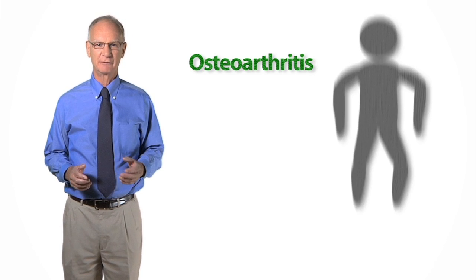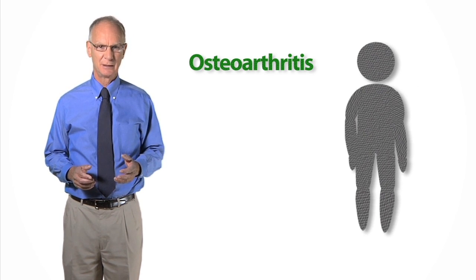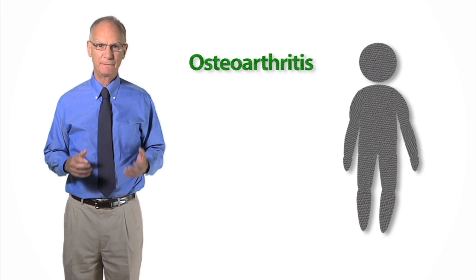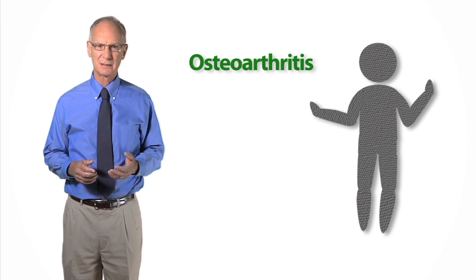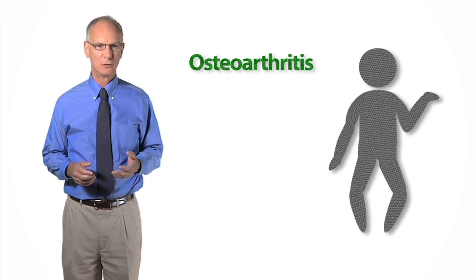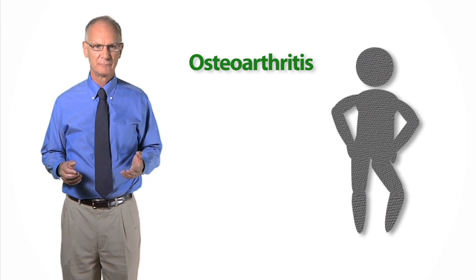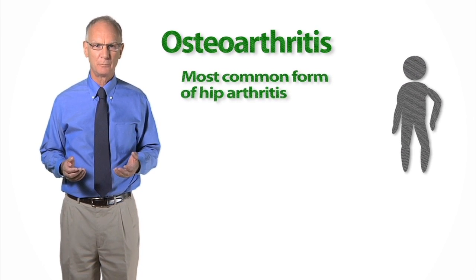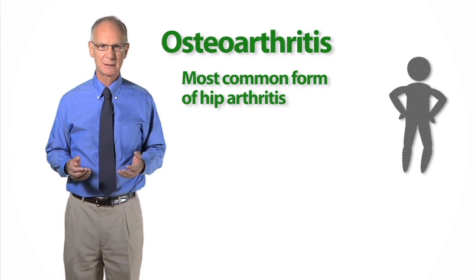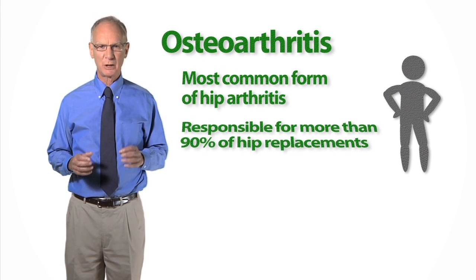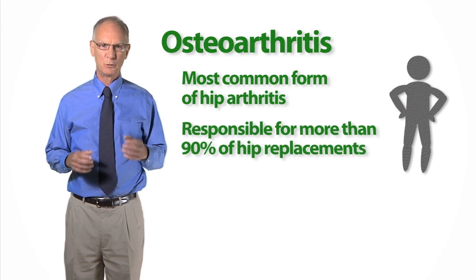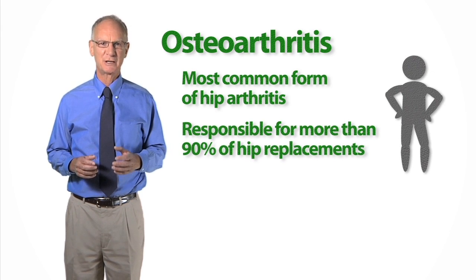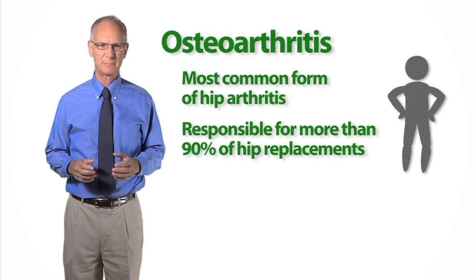Osteoarthritis is a progressive disease that can affect the hands, the knees, or the hips. It's the most common form of hip arthritis and is responsible for more than 90% of hip replacements.